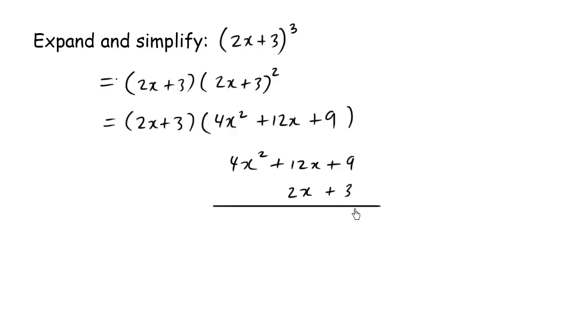Positive 3 times positive 9 is positive 27. Notice that we're keeping the signs. Positive 3 times positive 12x is positive 36x. Positive 3 times positive 4x squared is positive 12x squared.